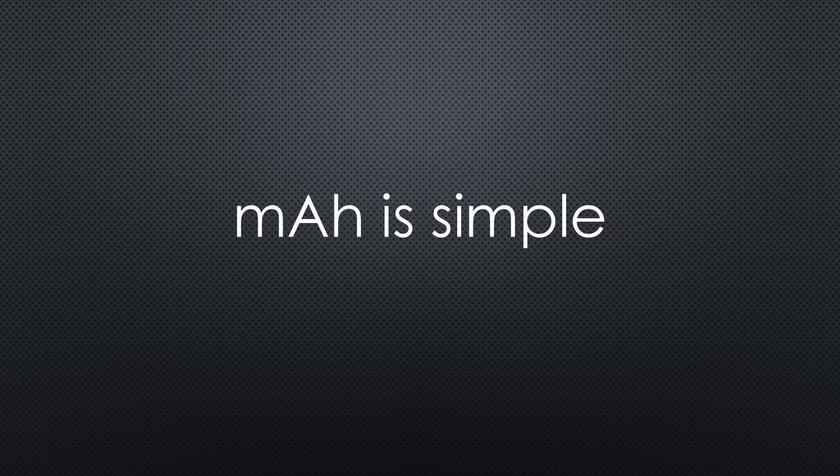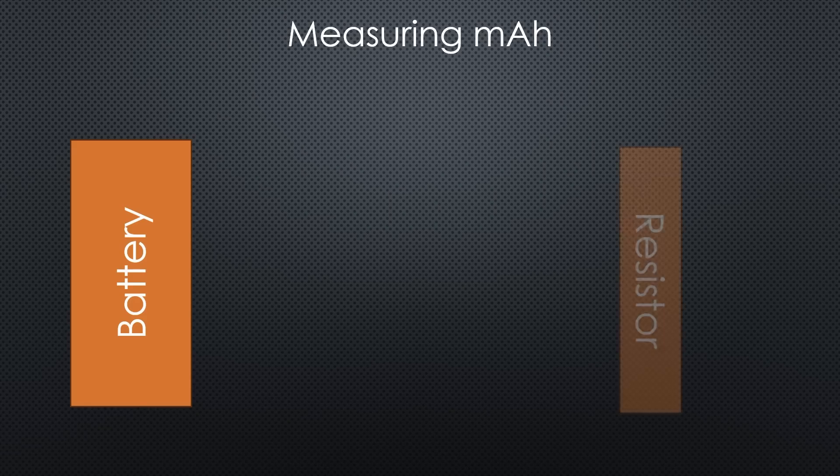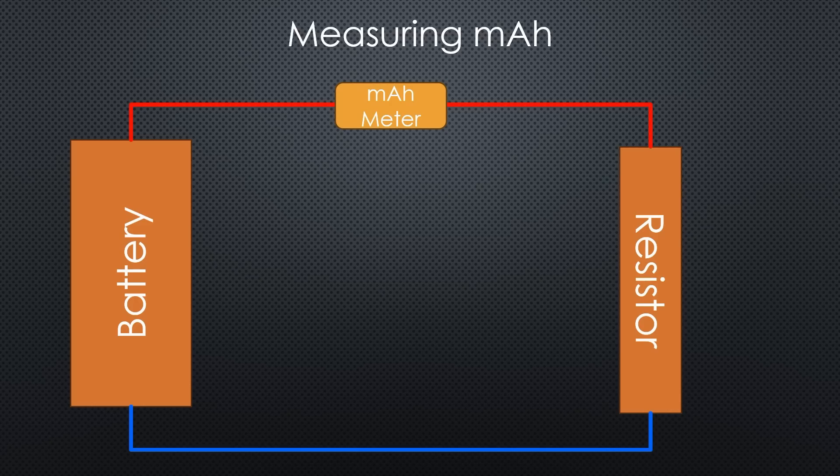So far, we compared rated mAh or mWh. But how do we measure the real thing? Measuring mAh is straightforward. You connect a resistor between the poles and an ampere meter with a mAh display in series. Because the current is the same everywhere, wire losses do not affect the measurement.